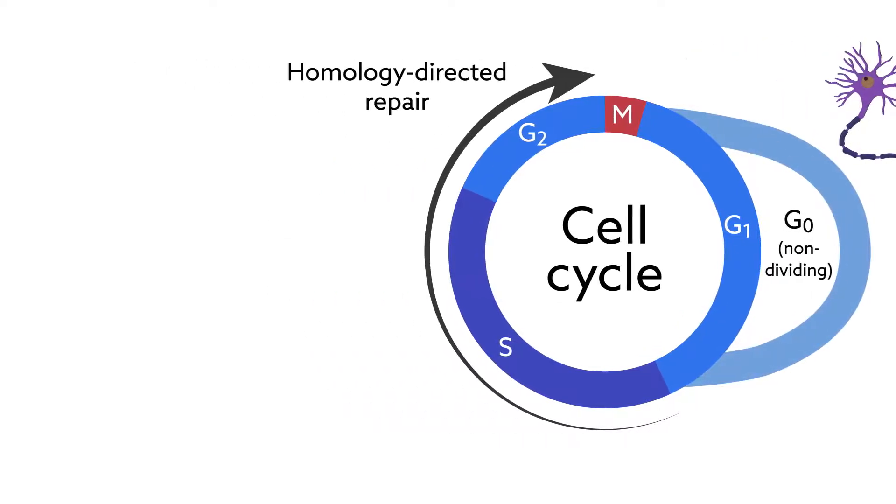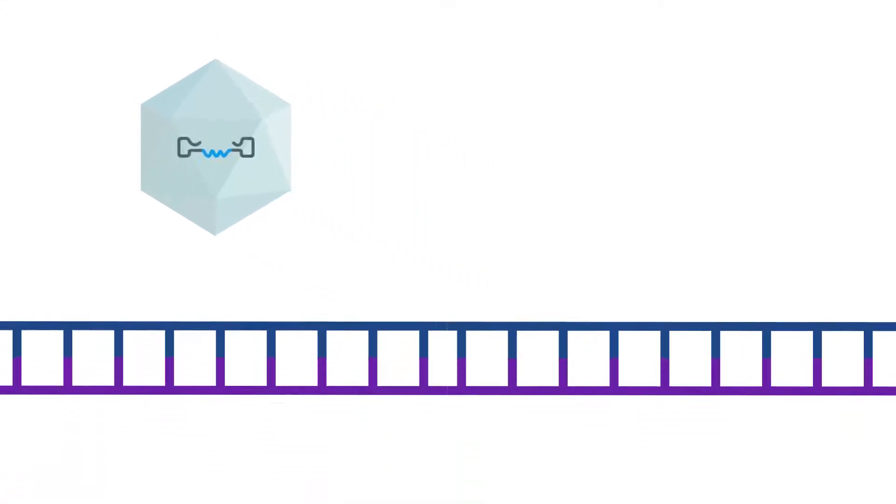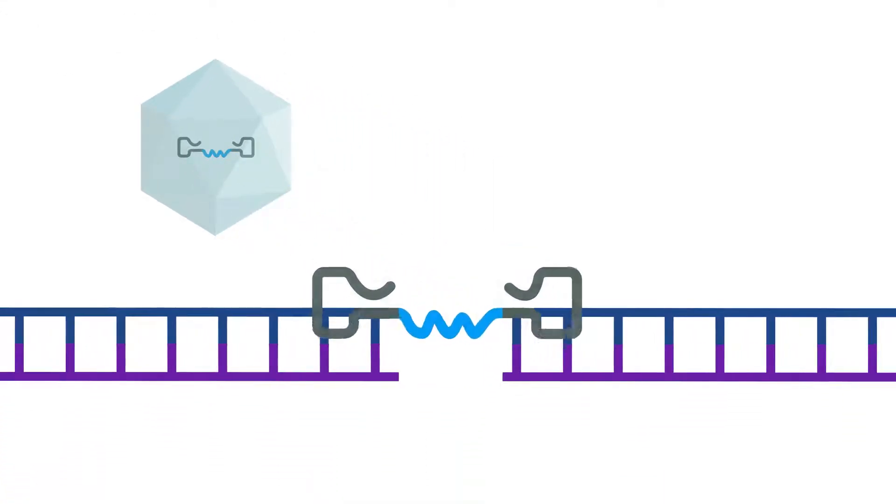To overcome this problem, neuroscientists added adeno-associated virus, or AAV, to the mix. This virus can effectively provide the donor template necessary for homology-directed repair. Therefore, it seems to increase gene targeting.